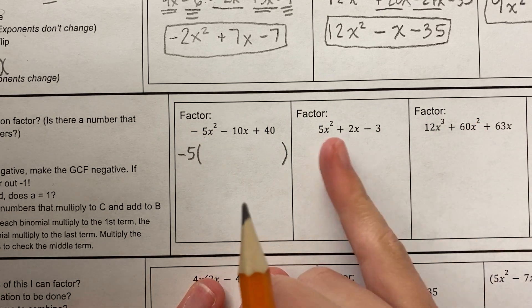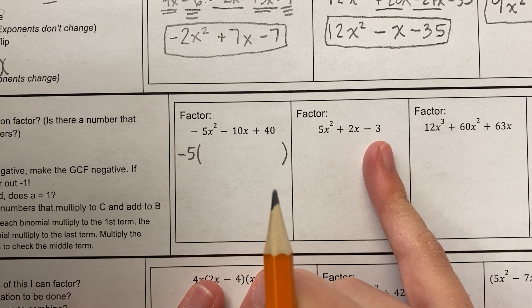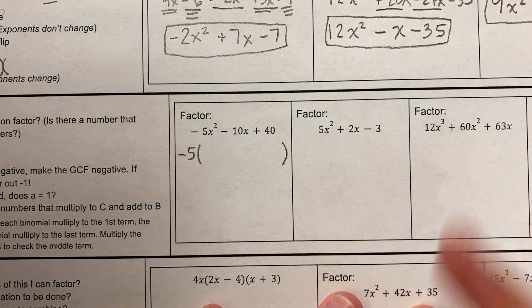Does this one have a GCF? Let's see, is there a number that multiplies to five, two, and three? No, there is not. The only numbers that multiply five are five and one, and that doesn't multiply to two or three. So no GCF here.